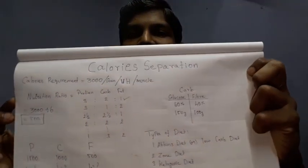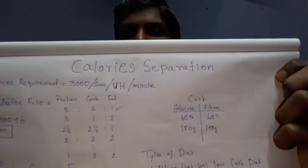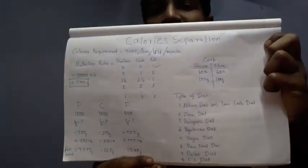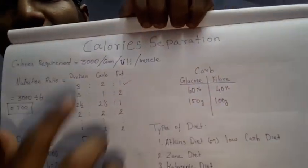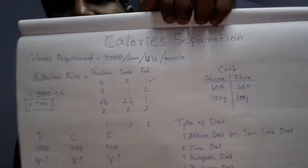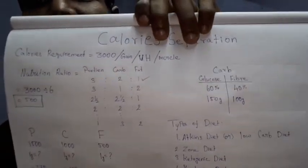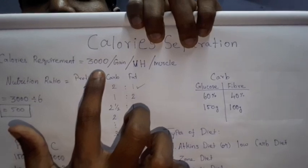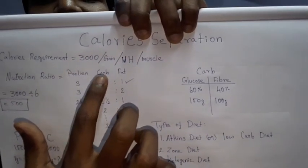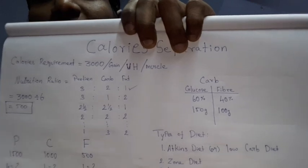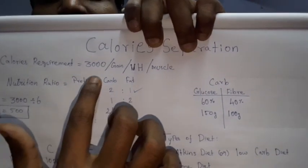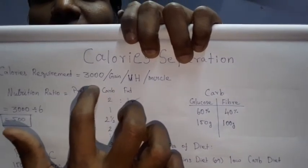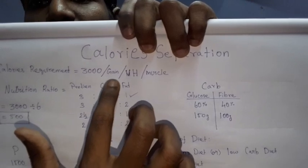I am going to prepare for this video and show you the details. I am going to show you the calorie separation. In the last video, we calculated the calorie requirements. In the last video, we calculated 2,500. Then we will calculate the weight gain — I am going to add 3,000. So, who is the goal?